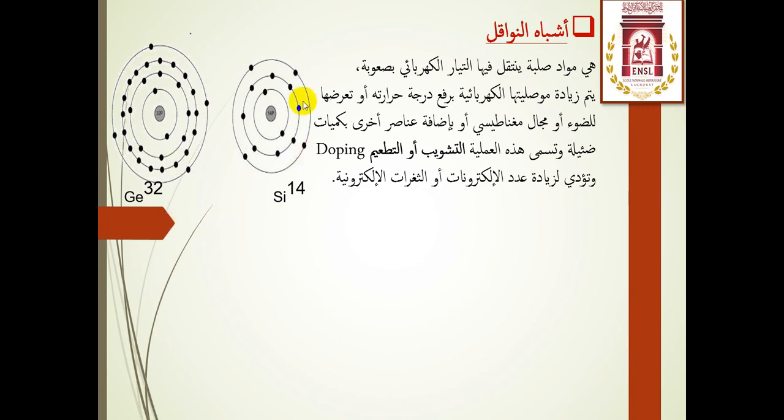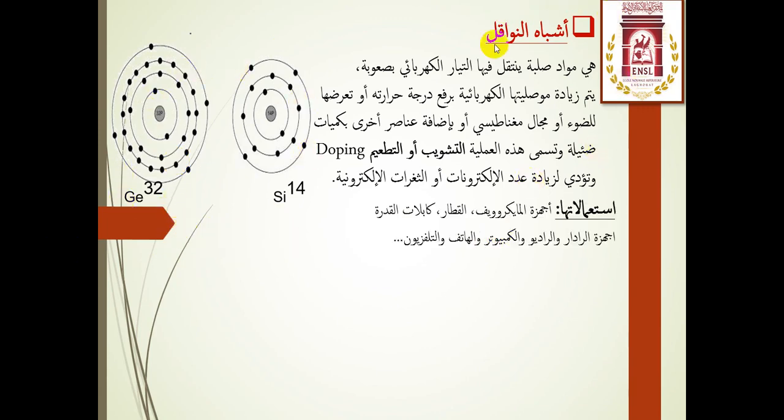أنصاف النواقل هي مواد صلبة ينتقل فيها التيار الكهربائي بصعوبة، يتم إما زيادة أو نقص موصليتها الكهربائية. الزيادة تتم برفع درجة حرارتها أو تعرضها لمجال مغناطيسي أو ضوئي أو أشعة X، وأيضا بإضافة عناصر أخرى في عملية التطعيم أو التشويب. هذا يؤدي لزيادة الإلكترونات والثغرات الإلكترونية الحرة التي تنقل التيار الكهربائي. وأبرز نصفي ناقل لدينا هما السيليسيوم والجيرمانيوم.